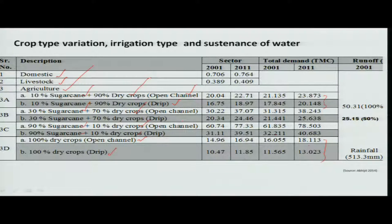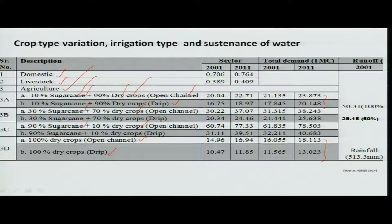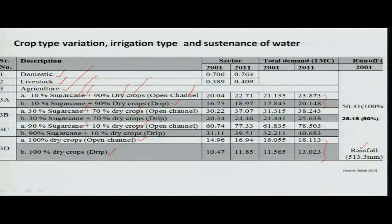If water is not there, then sugarcane suffers and dry crops also suffer. The question is whether you want a situation of total crop failure or you go for dry crops, which will give better yield with low water availability. When there is low water availability, this is the strategy to adopt. This type of situation is okay in 513 mm of rainfall, whereas in other areas you will see different results.